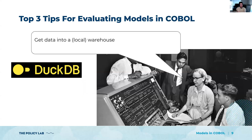Top tip number one: you probably can't expect, at least to start, a really great data warehouse with all the modern tools in the cloud. There's a lot of lawyers involved in procurement, and a lot of possibly privacy laws that are stopping things from flowing into the cloud. For your first pass, you're going to need to get your data locally and build a local data warehouse. I really recommend tools like DuckDB that can hold a lot of data locally, and I recommend subsampling and judiciously pulling data from the database for your first pass. Eventually you'll be able to build these things into automated systems.